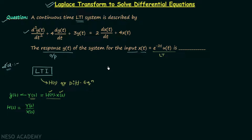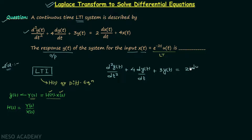Let's write down the given differential equation. It is: 2 times the second derivative of y(t) plus 4 times the first derivative of y(t) plus 3 times y(t) equals 2 times the derivative of x(t) plus 4 times x(t). To obtain the Laplace transform of this differential equation, we are going to use the differentiation in time property of the Laplace transform.